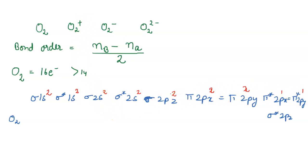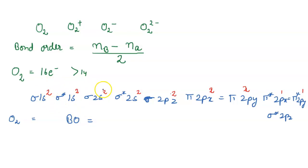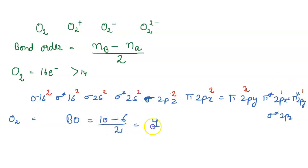Now we put these electrons into the bond order formula. The number of bonding electrons is 10. The anti-bonding electrons — marked with a star — total 6. So bond order equals 10 minus 6 divided by 2, which equals 4 divided by 2, which equals 2. The bond order of O2 is 2.